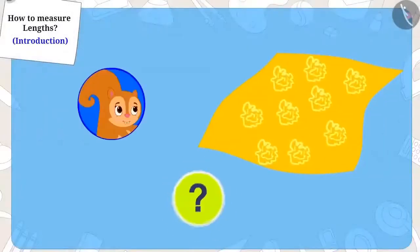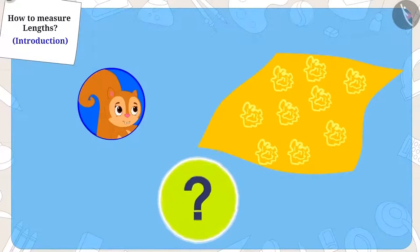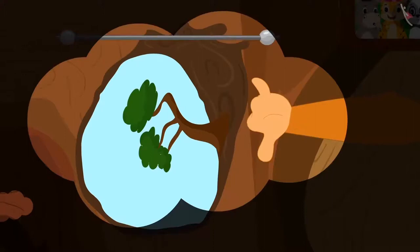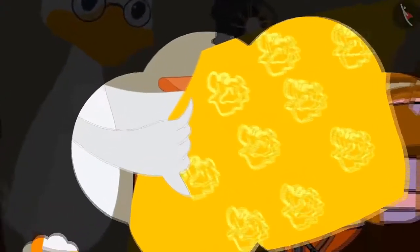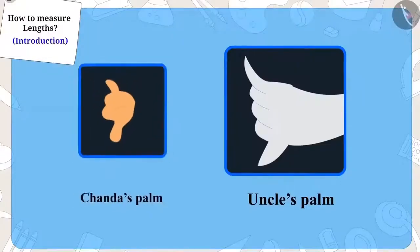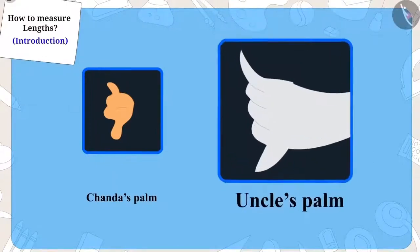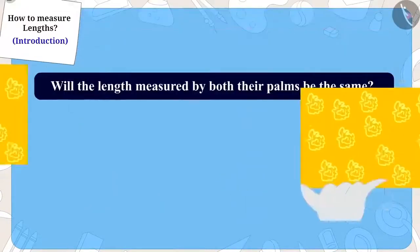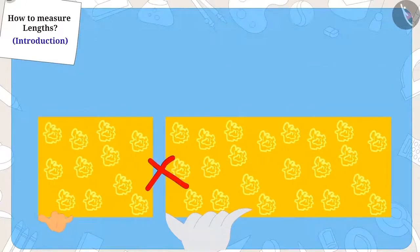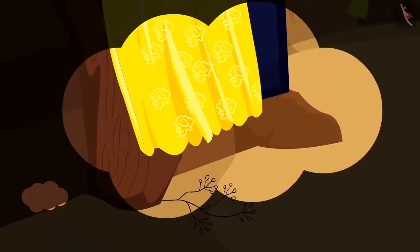Children, can you tell me why this happened? Chanda measured the window using her palms, and while giving the cloth, uncle had measured the cloth using his palms. Now Chanda's palms are so small and uncle's palms are so big. So will the length measured by both their palms be the same? No. That is why Chanda's window curtain reached the floor.